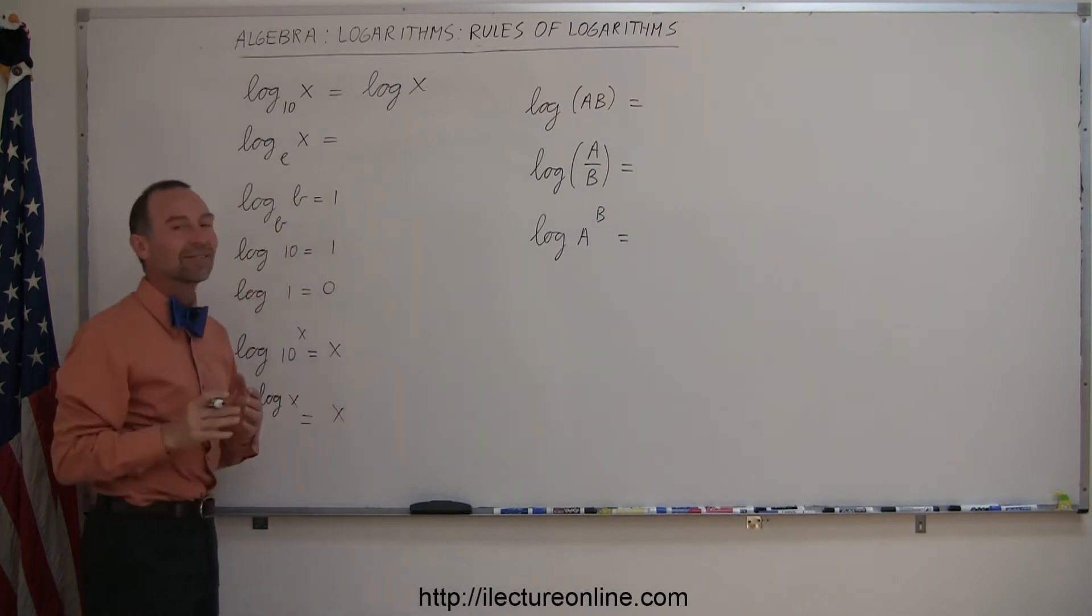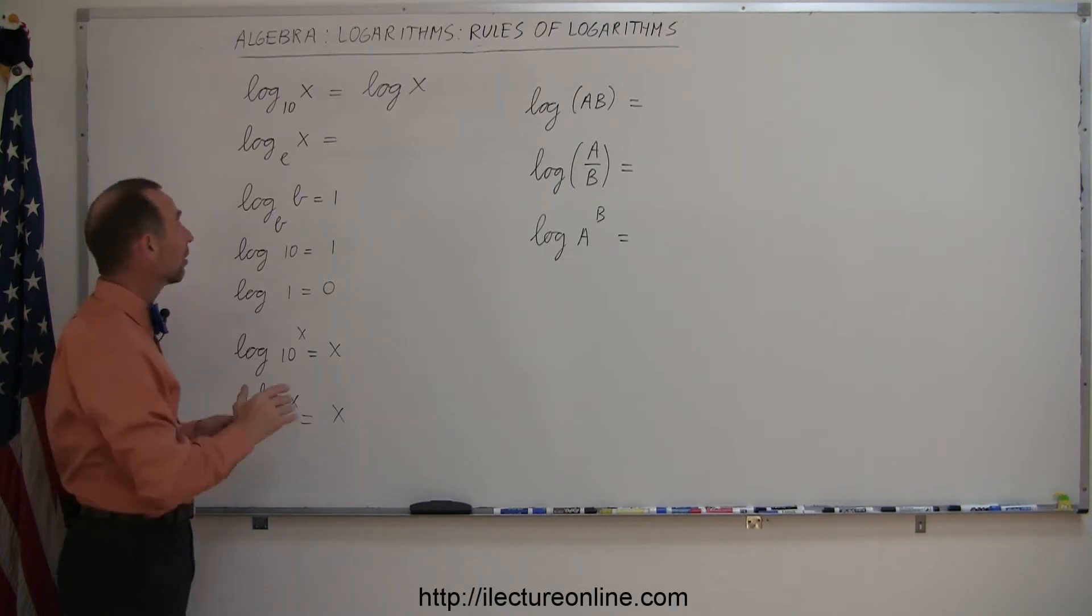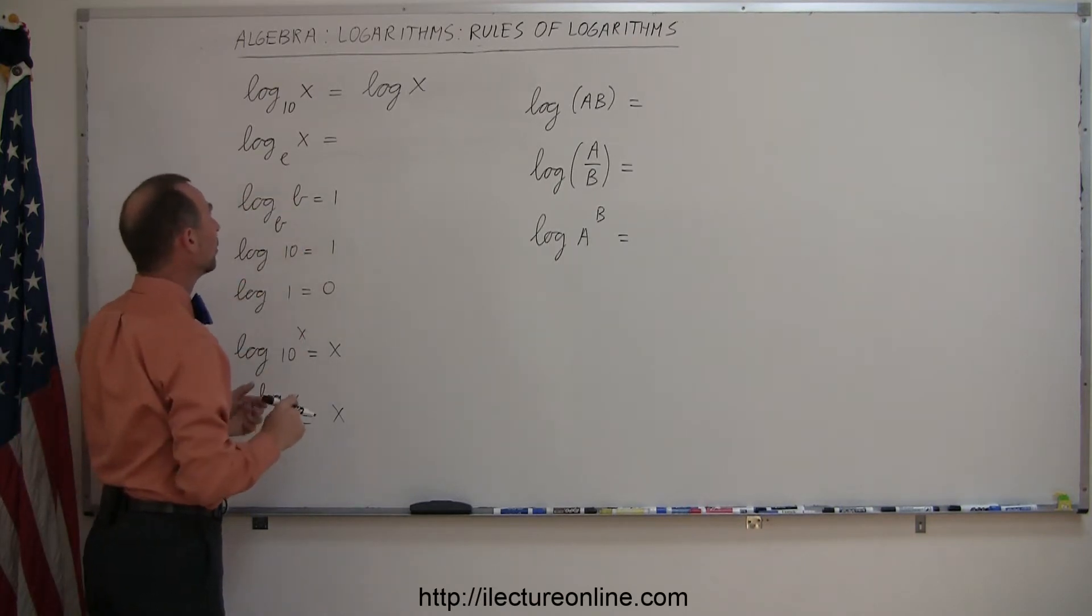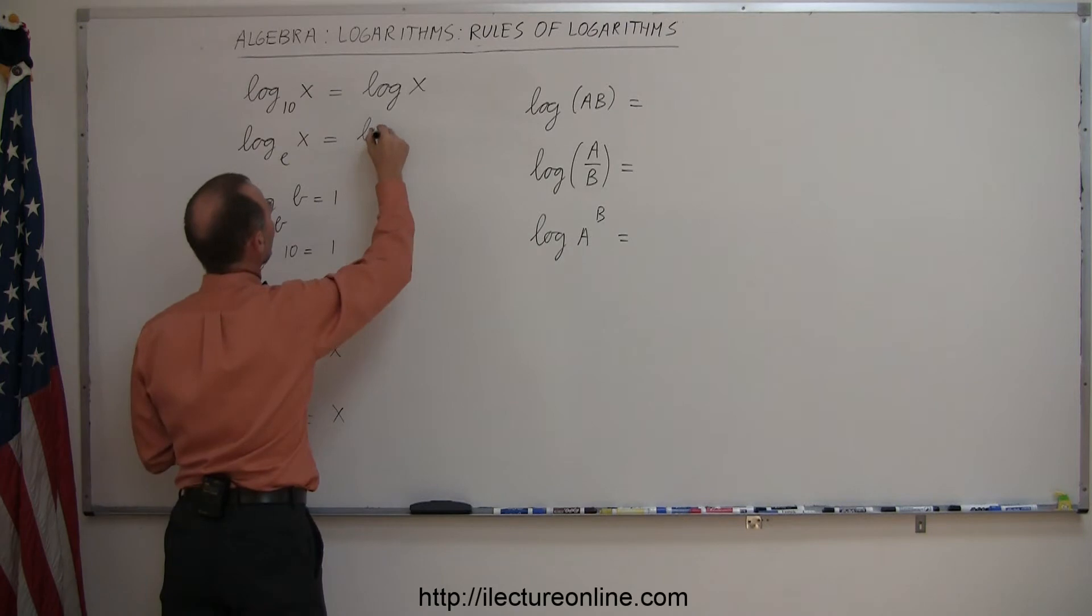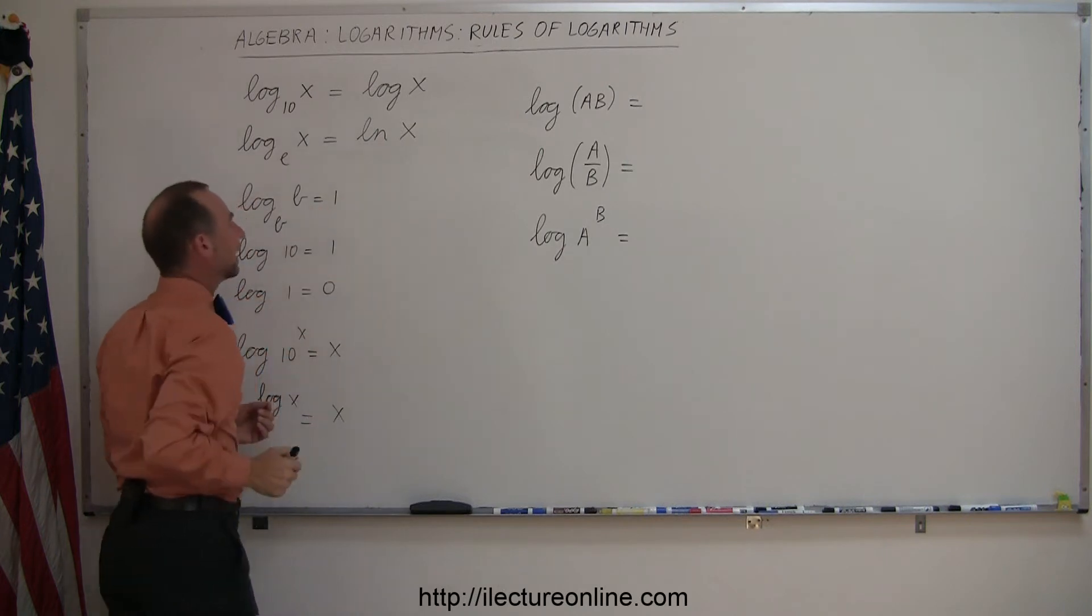And that's simply understood to be base 10, because in most cases when we use logarithms, we either use base 10 or we use base e. And so base e, which is a natural number, when we see something like that, we can then write it as a natural log of x. So both of these really mean log to the base 10 and log to base e.